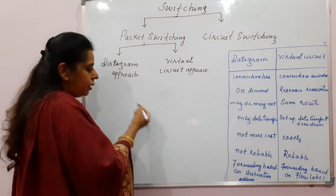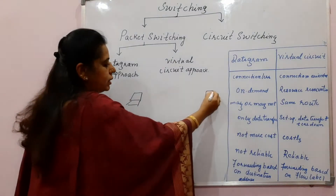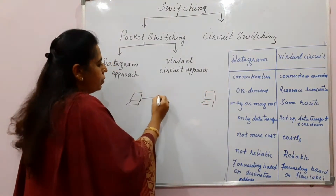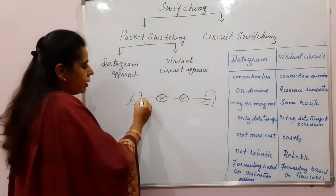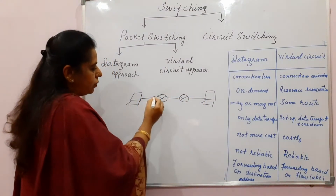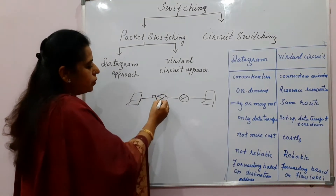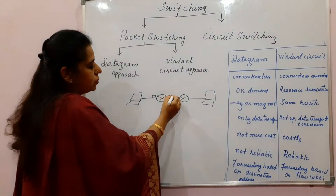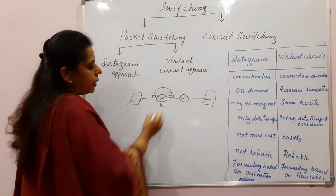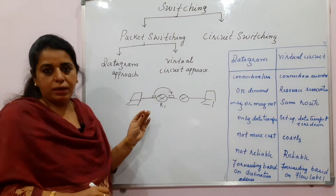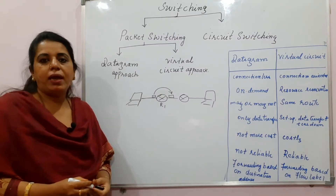In the previous lectures, I gave you many network scenarios where there is a sender, a receiver, and in between you have the connecting devices, for example, routers. When a packet comes to the input queue of the router, it goes to the output port — the router receives at the input port and places the packet on the output port. There is a kind of switching taking place here.